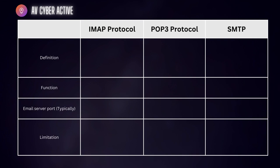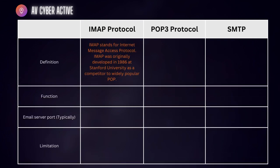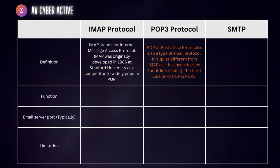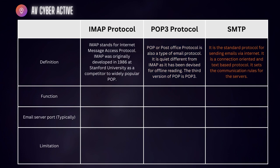Beginning with the IMAP protocol: it stands for Internet Message Access Protocol, and it was originally developed in 1986 at Stanford University. POP3, or Post Office Protocol, is also a type of email protocol different from IMAP — it was devised for offline reading. SMTP is a standard protocol for sending emails via the internet; it's a connection-oriented and text-based protocol. In terms of function, IMAP and POP3 are for retrieving or downloading emails, and SMTP is specifically designed for sending emails.